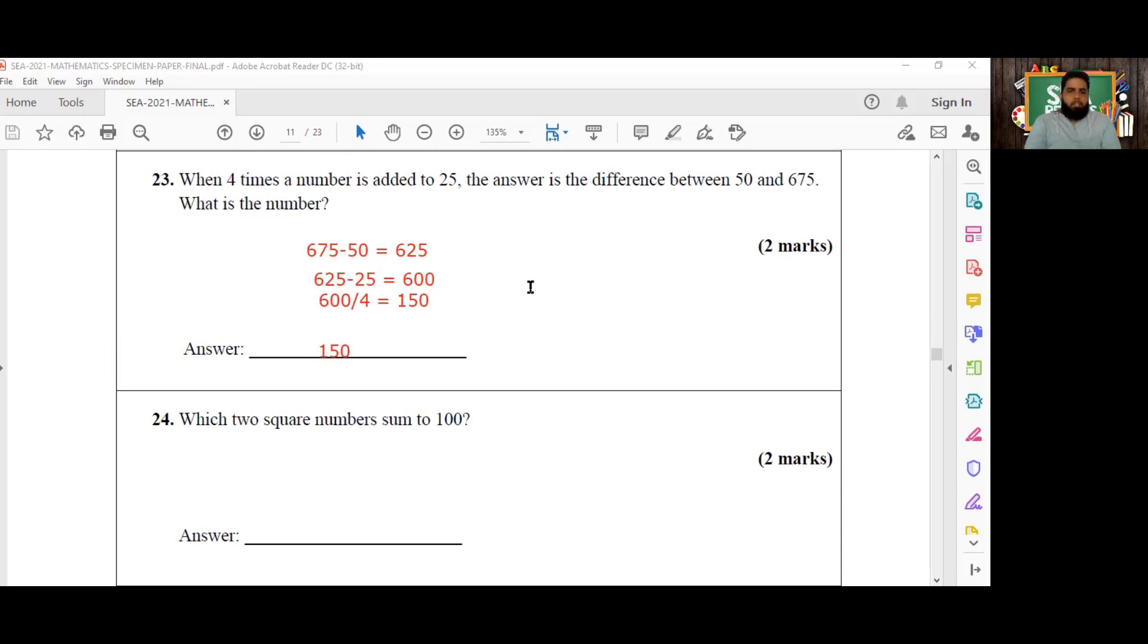So our final answer for this question is 150. And of course, you can check it back to make sure that it's correct. First, you can times 150 by 4, you're going to get 600. And you add 25 to that, you're going to get 625. And of course, the difference between 675 and 50, as we've already demonstrated, is 625. And that gives us certainty that the number is 150. Okay guys, so thank you for tuning in today. I do look forward to seeing you again tomorrow. Take care. Have a good evening. Assalamualaikum.